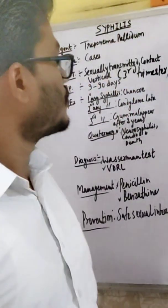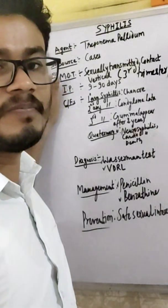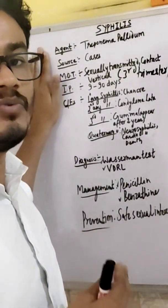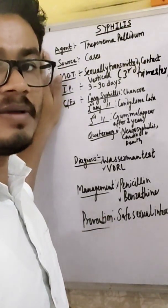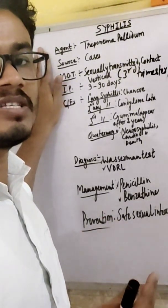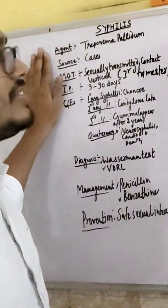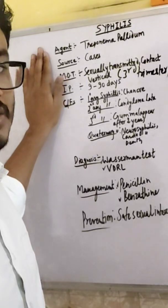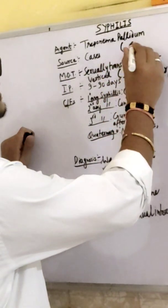Namaste everyone. Now we are going to discuss about syphilis. Syphilis is a bacterial disease. We include syphilis in STI — sexually transmitted infection. Previously it was included as STD, but nowadays we include it in STI.